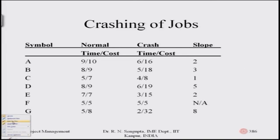The slope for activity B is three — that is the cost increase per day of reduction on a standalone basis. For activity C, it is eight minus seven, which is one, divided by five minus four, which is one — so one divided by one is one. For activity D, nineteen minus nine is ten, divided by eight minus six which is two — giving a slope of five. For activity E, fifteen minus seven is eight, divided by seven minus three which is four — eight by four is two.